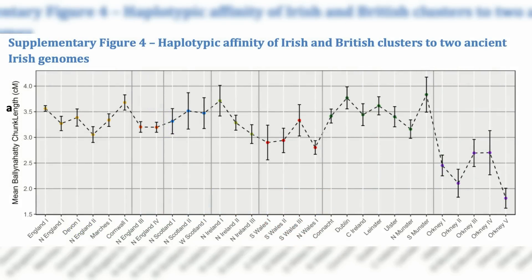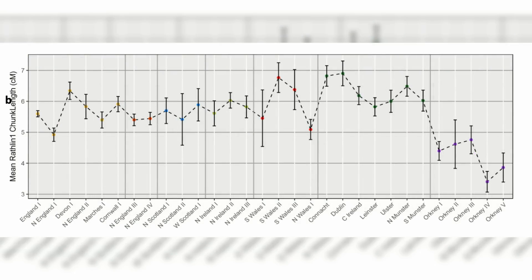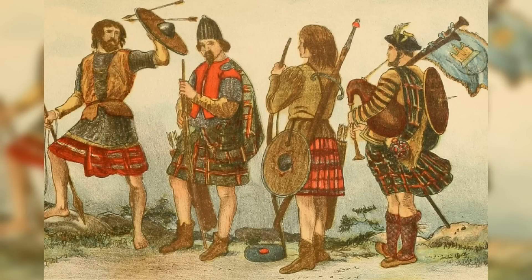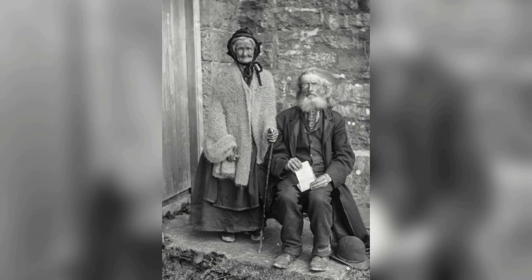Scientists conducted chromopainter analysis and compared modern Irish and British clusters to the Irish Neolithic Ballynahatty (3,343–3,020 BC) and Irish Bronze Age Rathlin 1 (2,026–1,534 BC) genomes. The results showed that most clusters within Ireland and Britain share a similar affinity with Ballynahatty, with no significant differences between individual Irish clusters. Rathlin 1's highest haplotypic donations were to modern Celtic-speaking populations — Ireland, Wales, and Scotland — with Connacht and Dublin showing the highest affinity. These findings suggest a homogeneous contribution of these ancient genomes to the current genetic structure in Ireland.